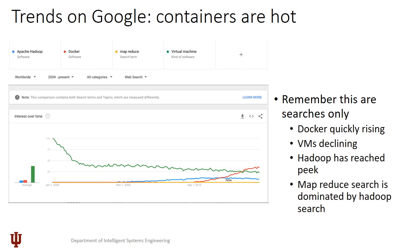It is important to look not only at Gartner but also at other information sources. When we look at Google Trends and search trends, it is not an absolute measure of success of a technology, but it gives some indication of its popularity and what is currently a hot trend. When comparing Apache Hadoop, Docker, MapReduce, and virtual machines, we see that virtual machines had their highest peak a long time ago and are now an established technology. According to the Gartner hype curve, adoption in industry has taken place and there is not much hype associated with virtual machines anymore, so it is natural to expect this technology to decline in search queries.